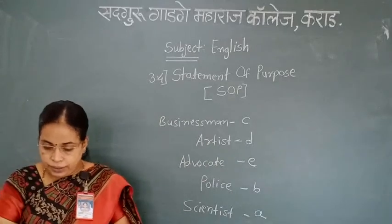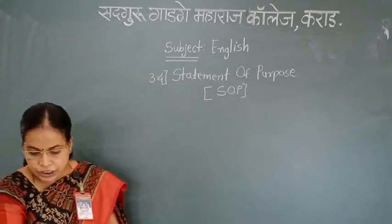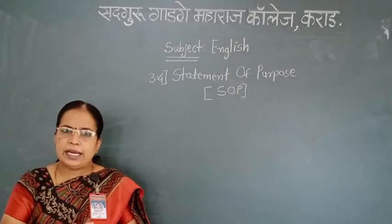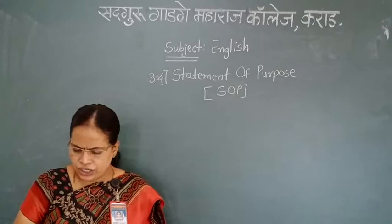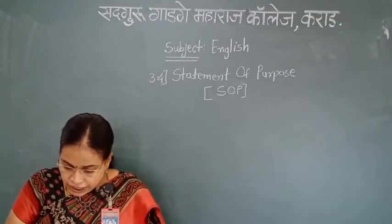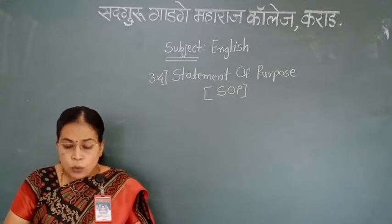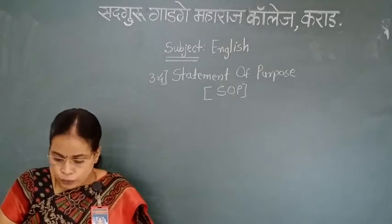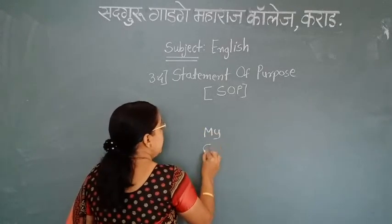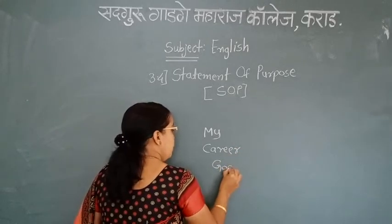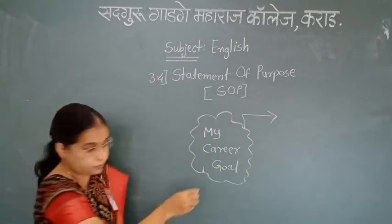Our second question is: what is your career goal? You can write here, 'I want to become a successful person,' 'I want to become a doctor,' or 'I want to become an engineer.' You can write anything. The third question is: which of your qualities would help you in achieving your career goal? You have to write four points.